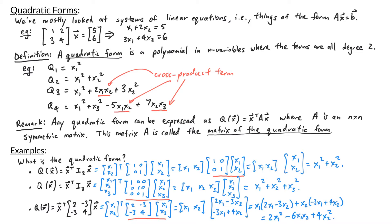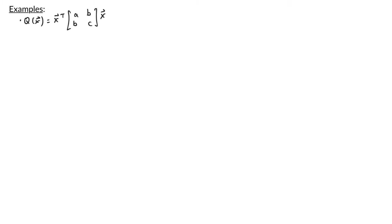Notice that the 2 in front of the x1 squared corresponds to the diagonal entry 2 in the matrix, the 4 in front of x2 squared corresponds to the diagonal entry 4, and the minus 6x1x2 is the sum of the off-diagonal entries. Now let's consider the quadratic form given by x transpose times the generic 2 by 2 symmetric matrix [A,B; B,C] times x.